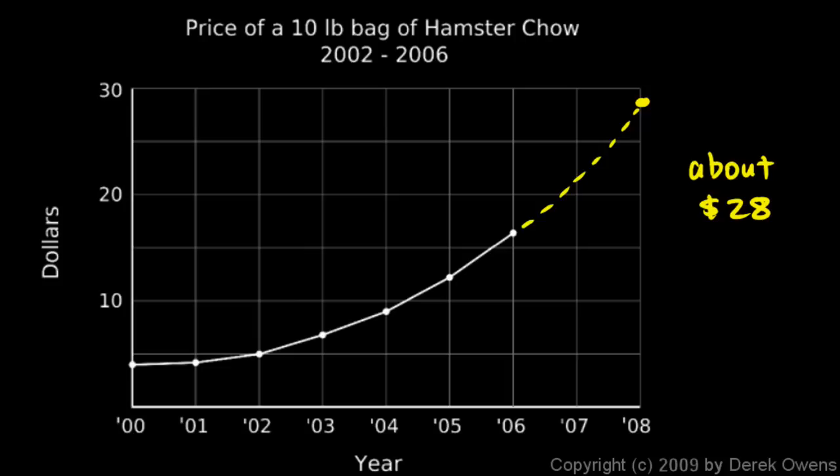If those points were all in a straight line it would be easier — we could draw in a best-fit line. In this case they're on a curve, so we draw in a best-fit curve and continue it as best we can. Note that this is just an estimate. There are advanced mathematical techniques for finding exactly the best-fit curve through given data, but those are for a much more advanced math class.